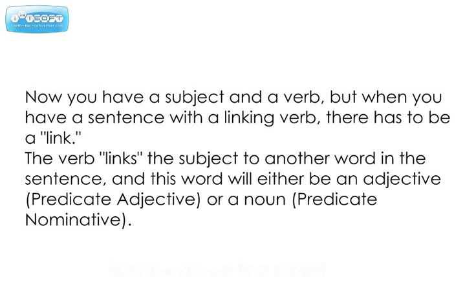Now you have the subject and the verb, but a linking verb technically has to link something to that subject. The word that it links to is called either a predicate adjective — or PA — or a predicate noun — or PN. And how do we know which is which?